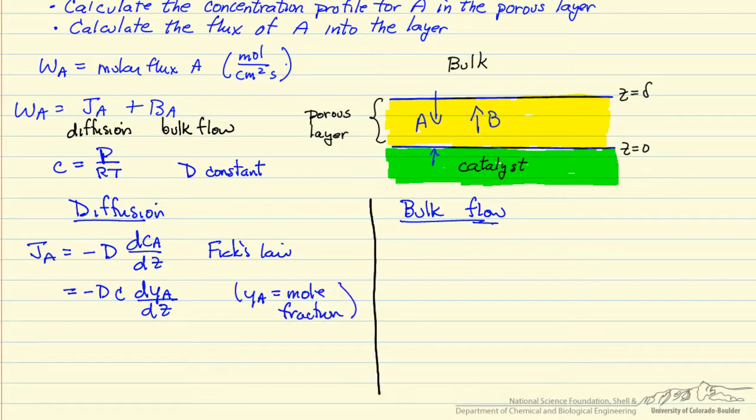So now we want to determine the bulk flow, so if we know the molar flux of A plus the molar flux of B, and they're going to have opposite signs, that's the total molar flux, and then I take the mole fraction times that. But it would give me what's the bulk flow of component A.